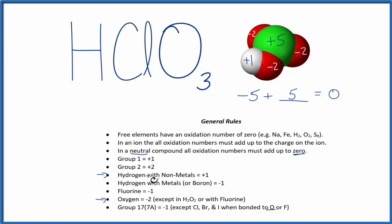So to recap, we found the oxidation numbers for the elements that we knew, and then we used the fact that a neutral compound will have all of its oxidation numbers adding up to zero to find the oxidation number for the chlorine in HClO3.